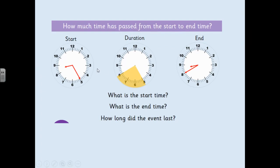Let's look at the next example. The start time is 25 minutes past 8 and the end time is 22 past 9. We need to look at how much time has passed between the start and end time. The minute hand was on 5 and has gone to 8, so counting in fives from 5: 5, 10, 15. The event lasted 15 minutes.